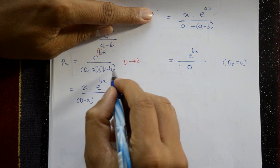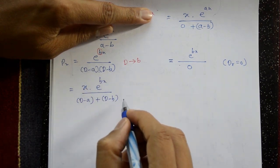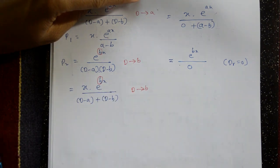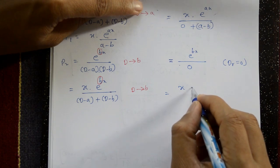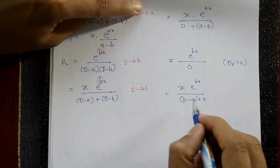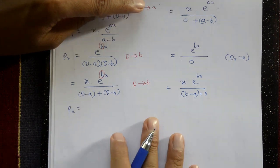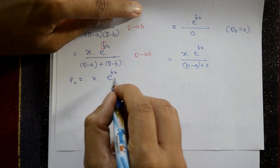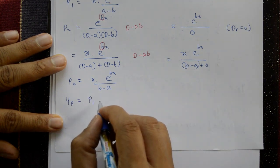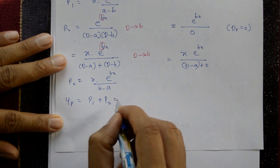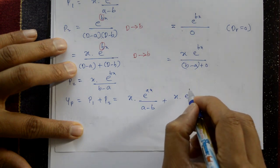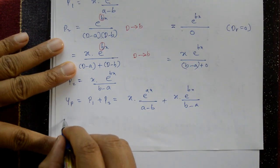Applying the product rule again and putting D = b: f'(b) = (b-a)·1 + 0 = (b-a). So P₂ = x·e^(bx) / (b-a). Therefore yp = P₁ + P₂ = x·e^(ax)/(a-b) + x·e^(bx)/(b-a).